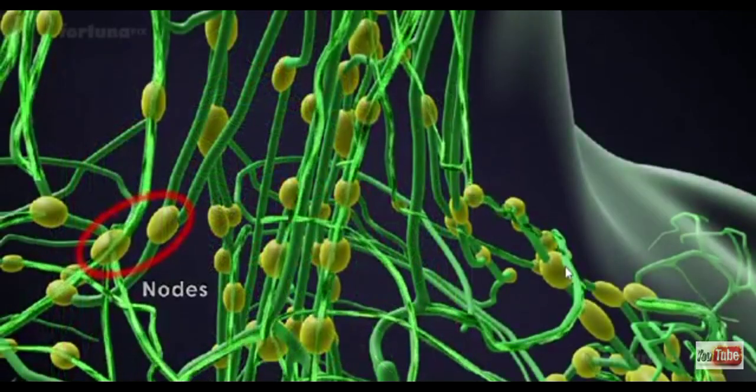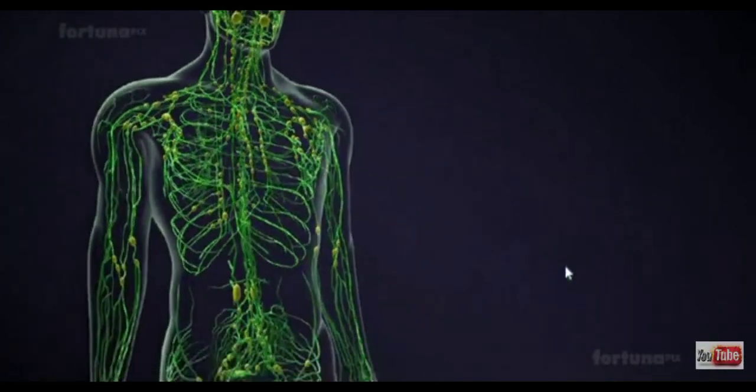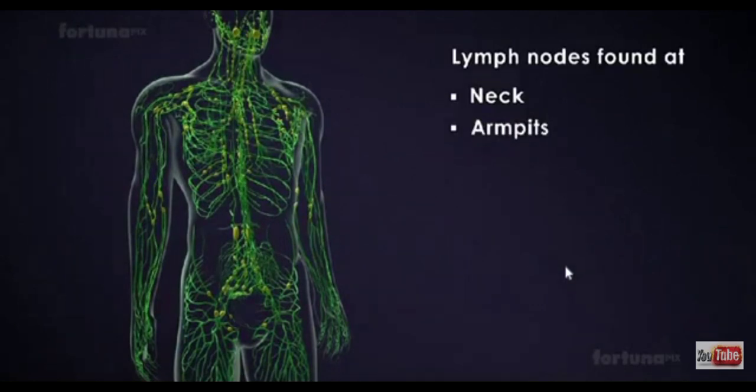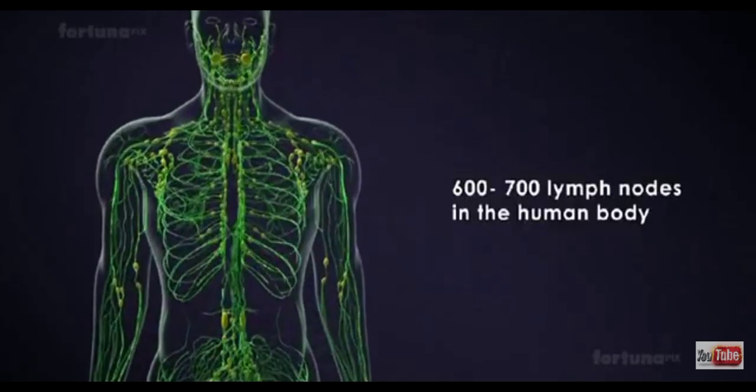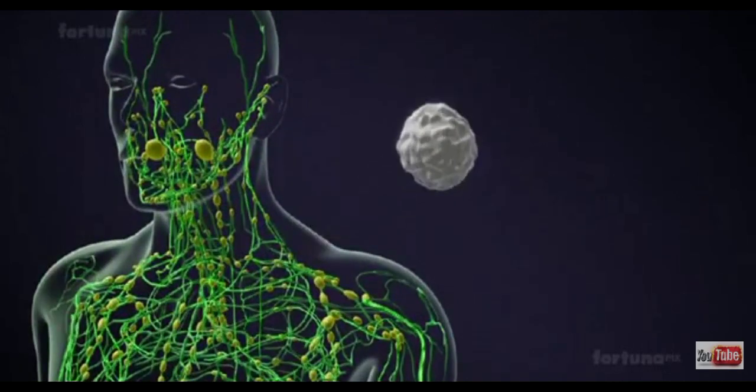These nodes are small bean-shaped enlargements found at various points, including your neck, armpits, groin, and the walls of the intestines. There are about 600 to 700 lymph nodes in the human body.